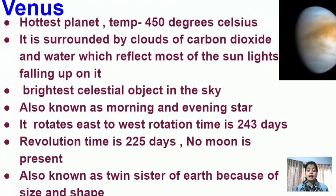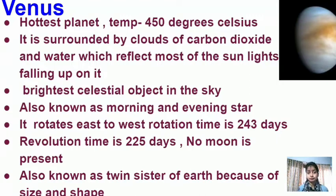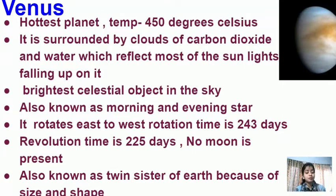Venus is also known as the morning and evening star because it is visible in both morning and evening. It rotates east to west, unlike most planets. Its rotation time is 243 days and revolution time is 225 days, making it quite slow. No moon is present on Venus.